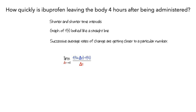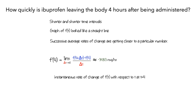From our work, we saw that these average rates of change were getting closer to roughly –34.813 mg per hour. This limiting value, which we write as f'(4), is the instantaneous rate of change of f of t with respect to t at t equals 4 hours, which we also call the derivative of f of t at t equals 4.